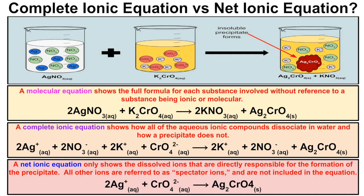If you remember from an earlier video, we learned about precipitation reactions. We said that anytime you have an aqueous ionic compound reacting with another aqueous ionic compound — that is, a compound where you have a positive ion bonded to a negative ion — and it produces a solid material, then that is going to be a precipitation reaction.